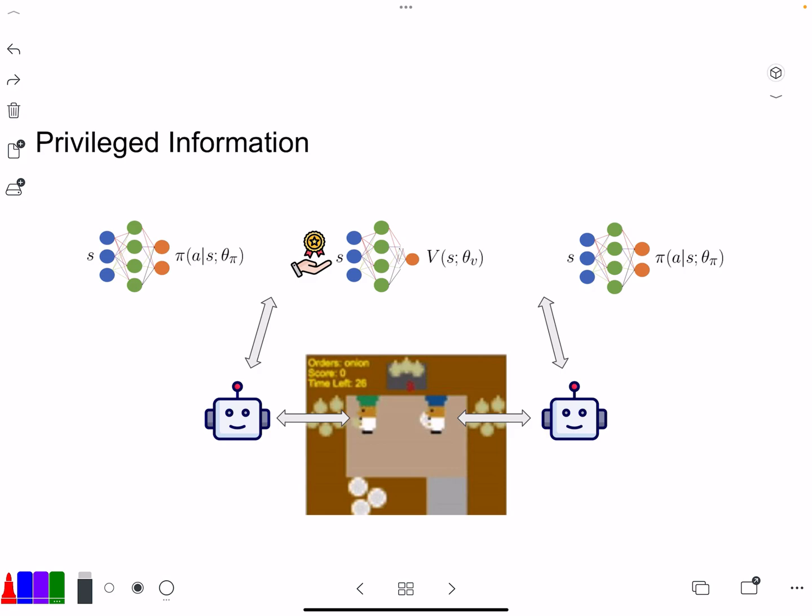So, again, the privileged information is the addition of information. That could be teammates, opponents, or things that you consider are relevant. Maybe, in this case, it was going to be distance to the onions or distance to the plates or whatever it is that you want to do, or what is your teammate doing. Now, in the case of Overcooked, in particular, this is fully observable. So, there's no need for some of these things. But if you get clever, you can actually leverage these architectures and have very interesting solutions.